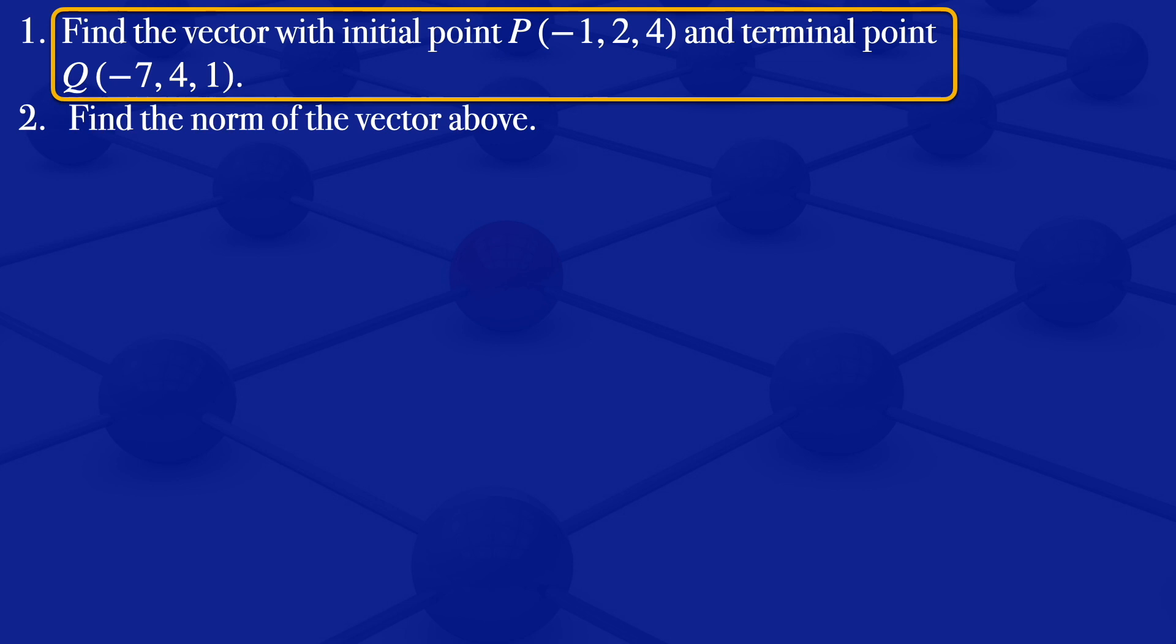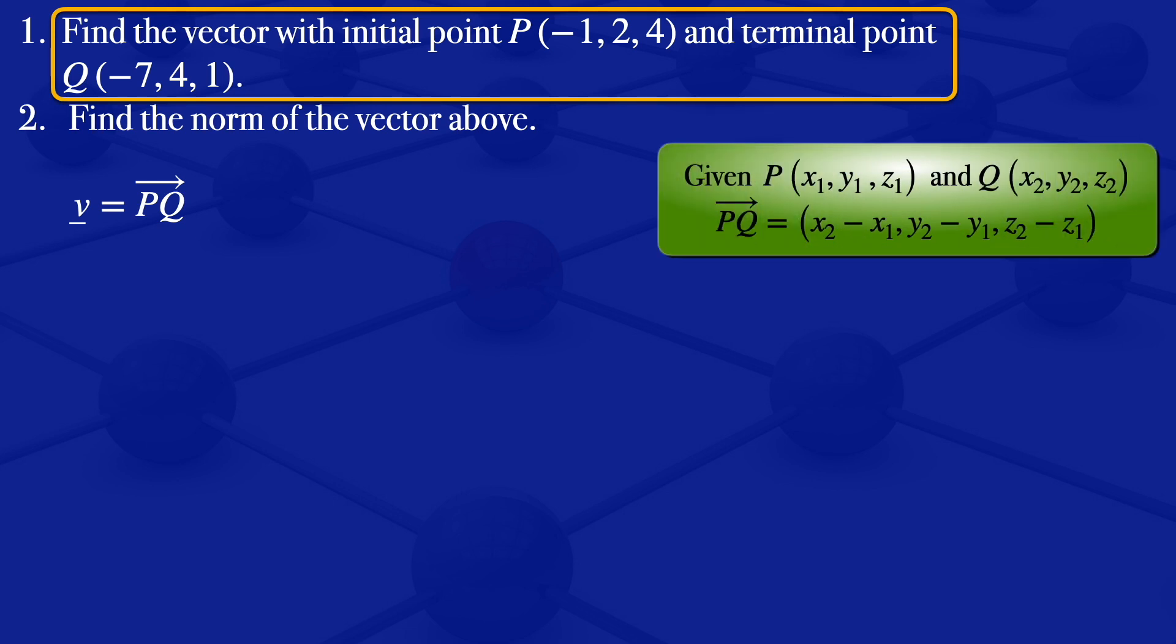What you want to find is the position vector, I'll call it v, which is the position vector from P to Q. When you are given two points P and Q, the position vector from P to Q is obtained by subtracting the components of the initial point from the components of the terminal point.